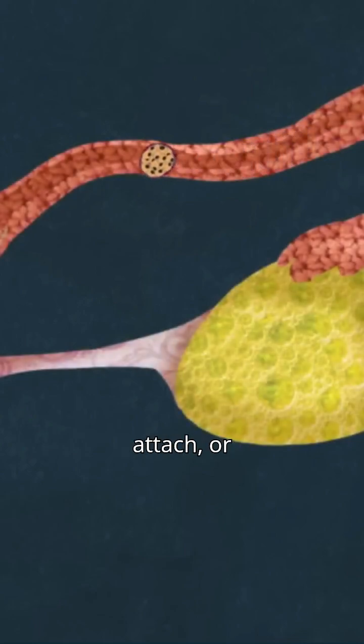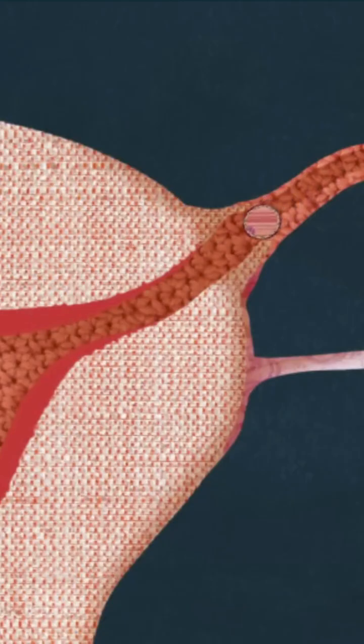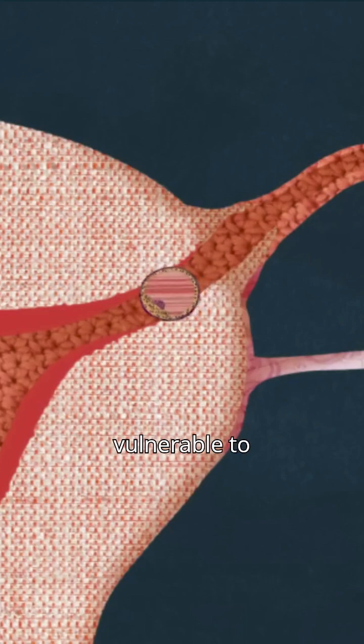What happens when an embryo fails the test? It might still manage to attach, or even get partly through the endometrium. As it slowly dies, it could leave its mother vulnerable to infection.